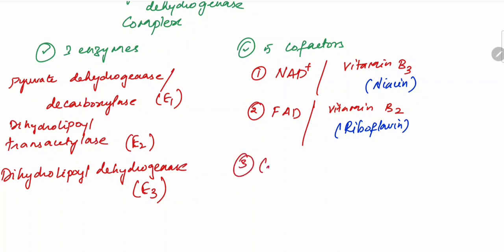You have coenzyme A, the third cofactor, and vitamin B5, which is called pantothenic acid.